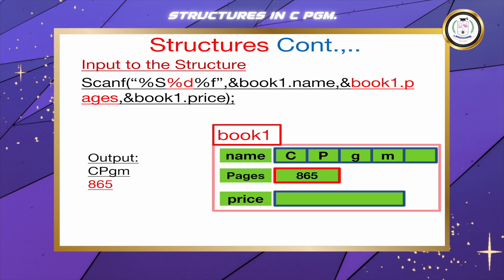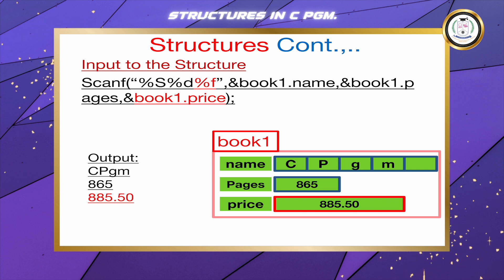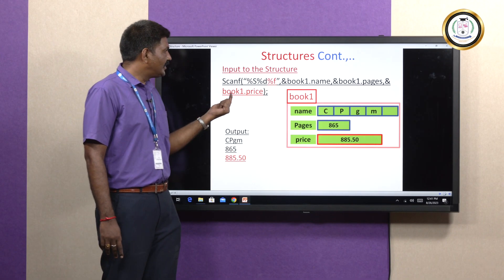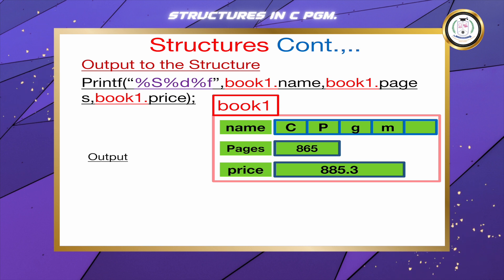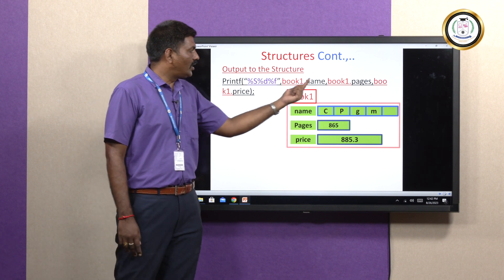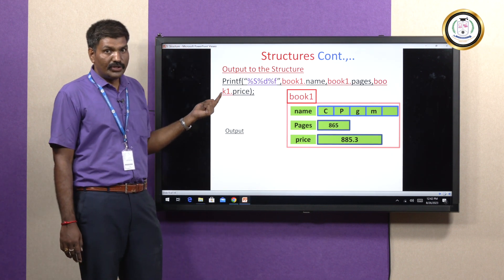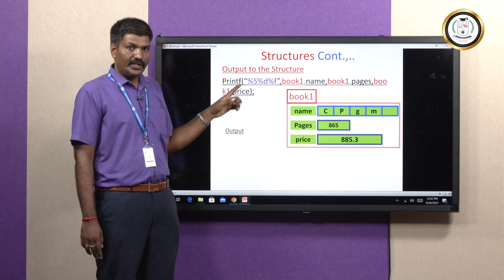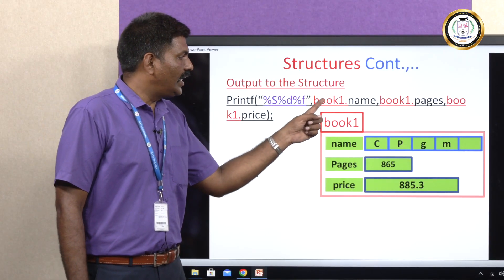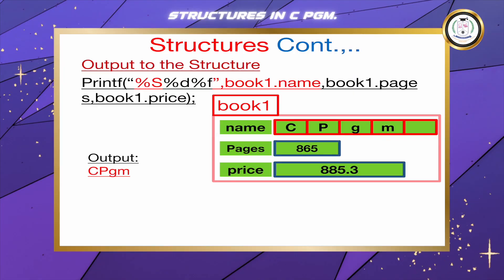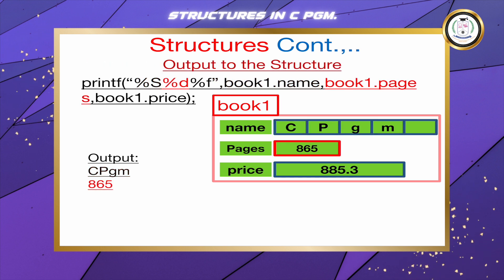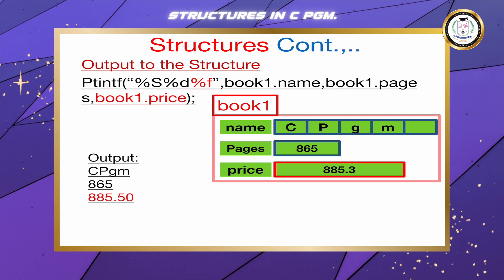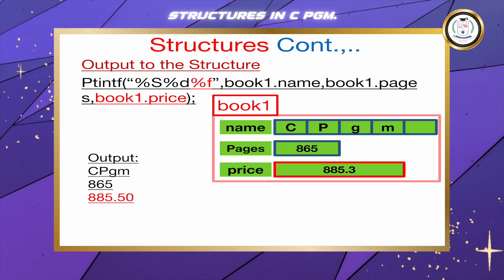The page number 865 uses %d and book1.page_number. The price 885.50 uses %f and book1.price. To print the values on the output screen, printf uses the same way: %s, %d, %f with book1.name, book1.page_number, book1.price — similar to scanf. The difference from normal printf/scanf is that instead of a single variable name, we use object_name.member_variable_name. Output: the book name, 865 pages, and price 885.50 rupees.